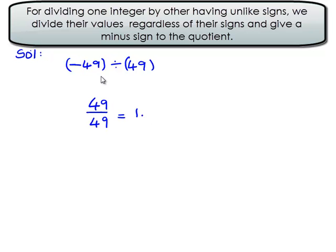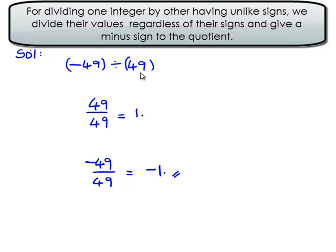When we divide two integers having opposite signs, we always get a negative sign in the answer. That is, negative 49 divided by positive 49 gives negative 1. Therefore, negative 49 divided by 49 is equal to negative 1.